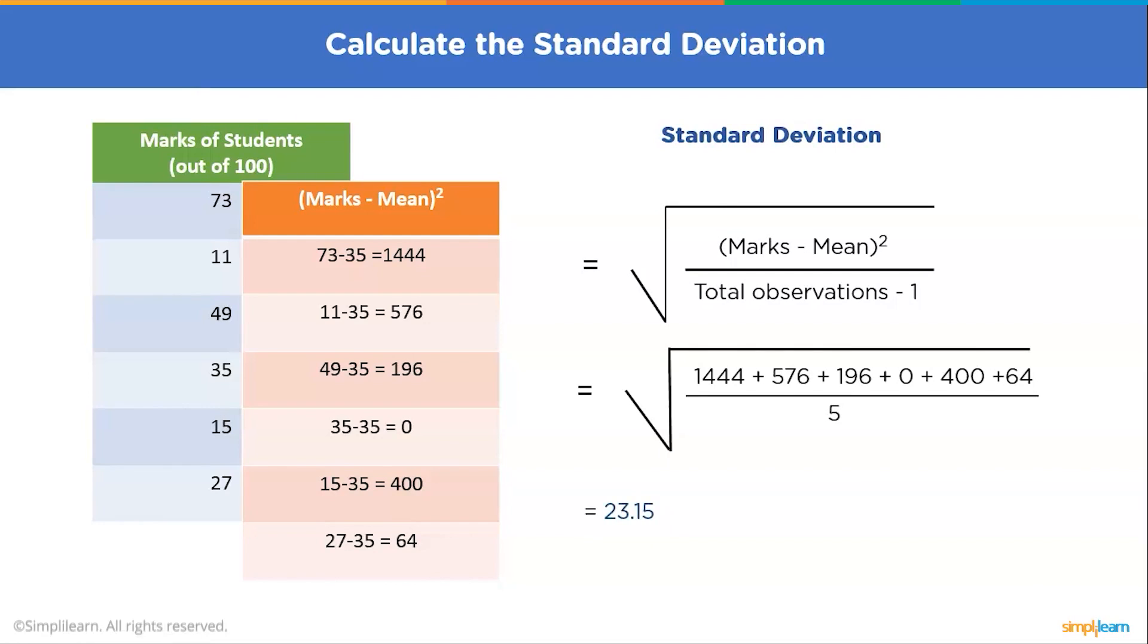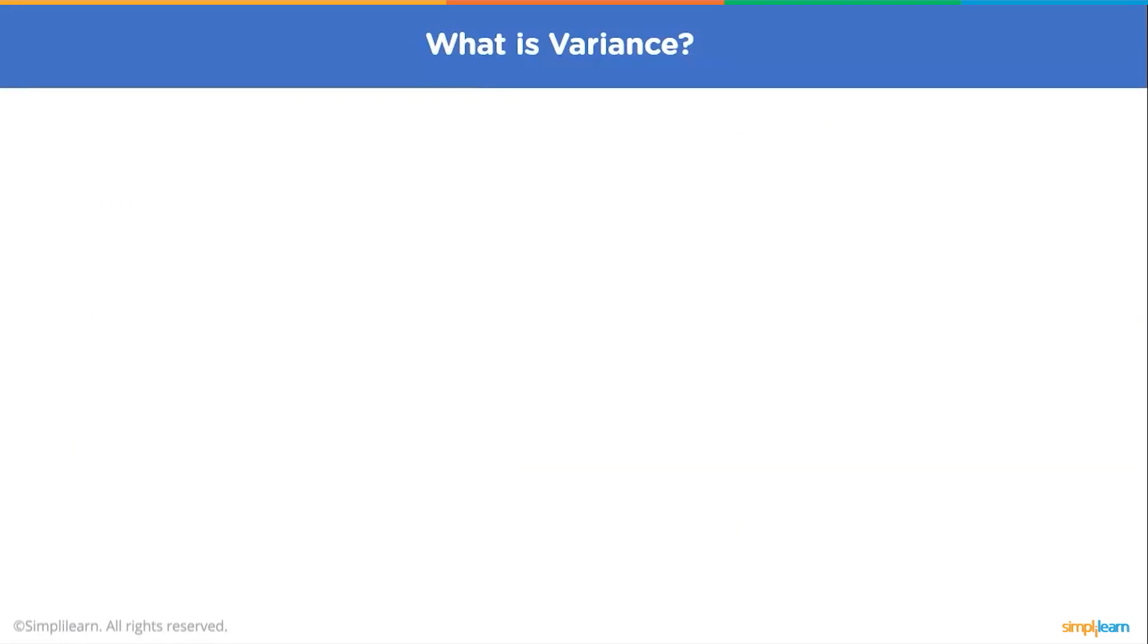Now you might be wondering, why we have calculated the standard deviation? What is the use of the standard deviation? So the standard deviation of 23.5, we find that the performance of the students are not on the same level. They are deviating all over the place. Now that we have learned about the standard deviation and have seen how to calculate the standard deviation by taking an example, let's move further and learn about variance.